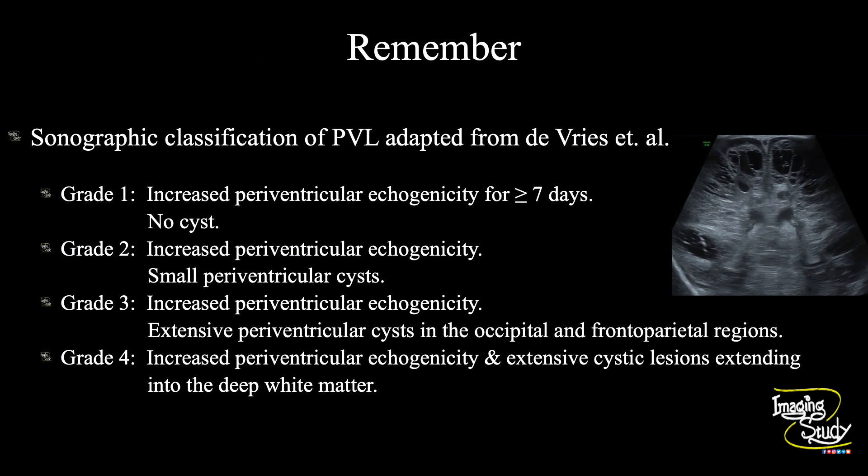Now, periventricular leukomalacia has 4 grades. In grade 1, there will be increased periventricular echogenicity only. In grade 2, you will get small periventricular cysts also. In grade 3, there will be extensive periventricular cystic spaces involving the occipital and frontoparietal regions. In grade 4, these cystic spaces will also involve the deep white matter, like you see in this picture.